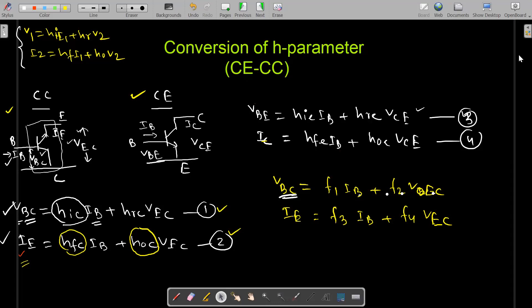Hello everyone. In this class I will explain how to convert one mode h-parameter to another mode h-parameter. For example, if you have the h-parameter for common emitter mode, how to convert the common emitter mode h-parameter to common collector mode or to common base mode. There is a uniform common framework, and by using that you can easily convert one h-parameter to another.